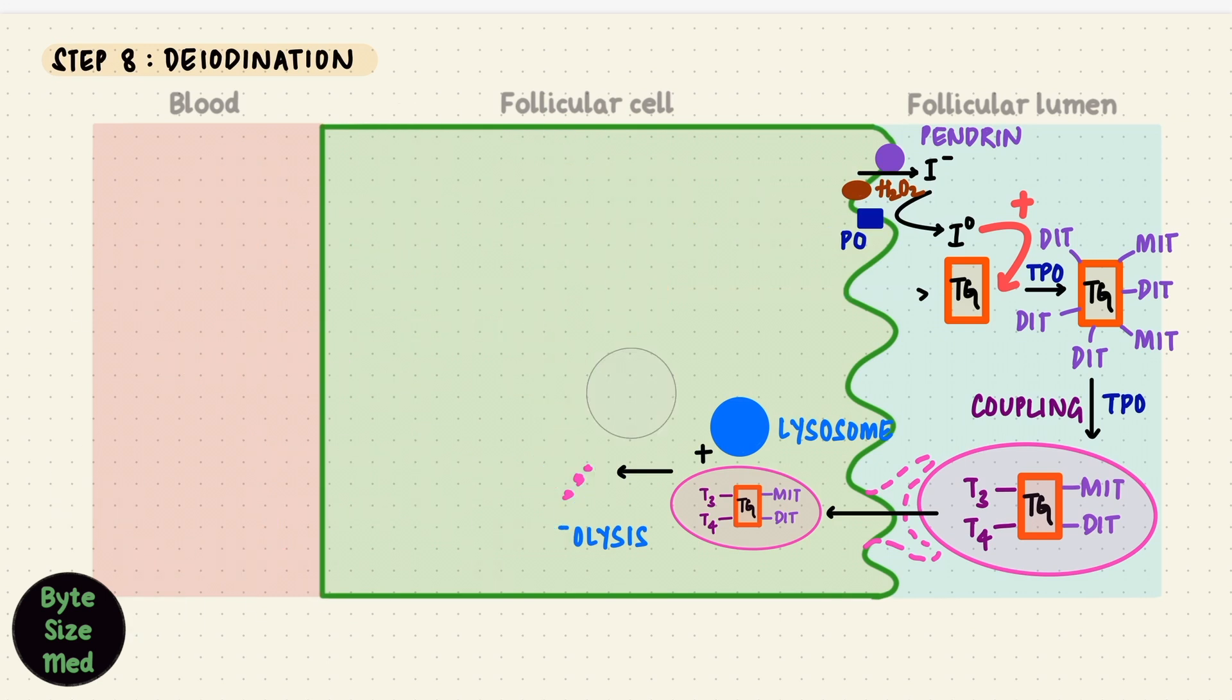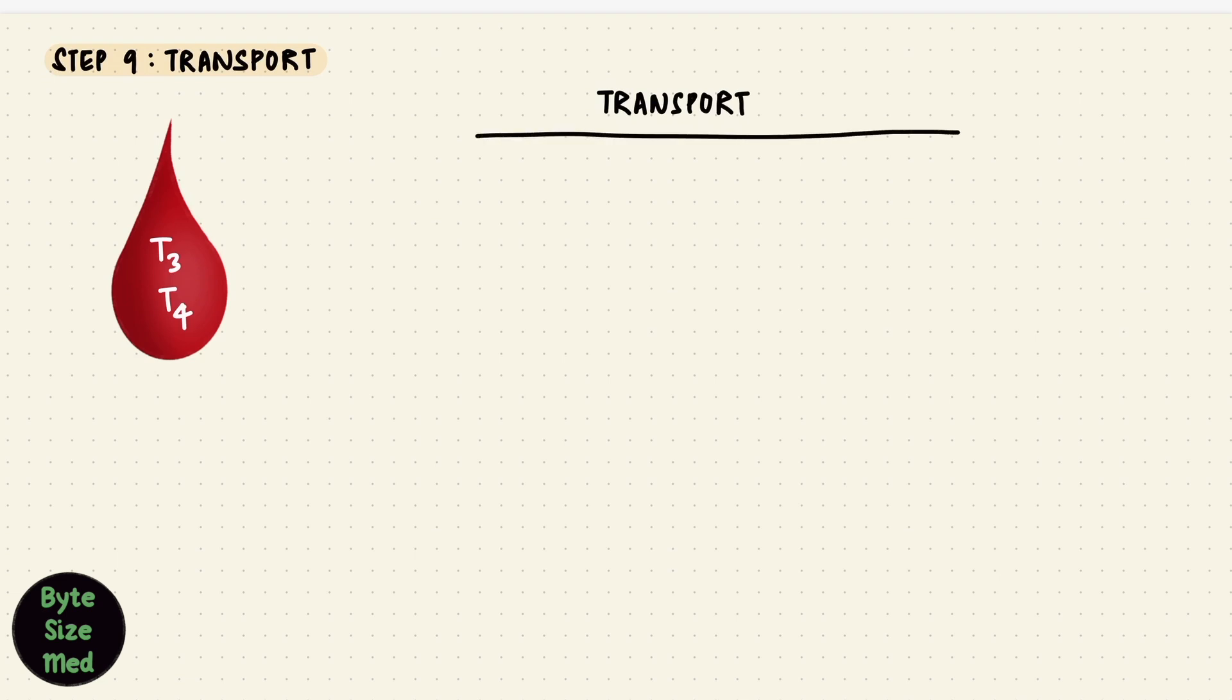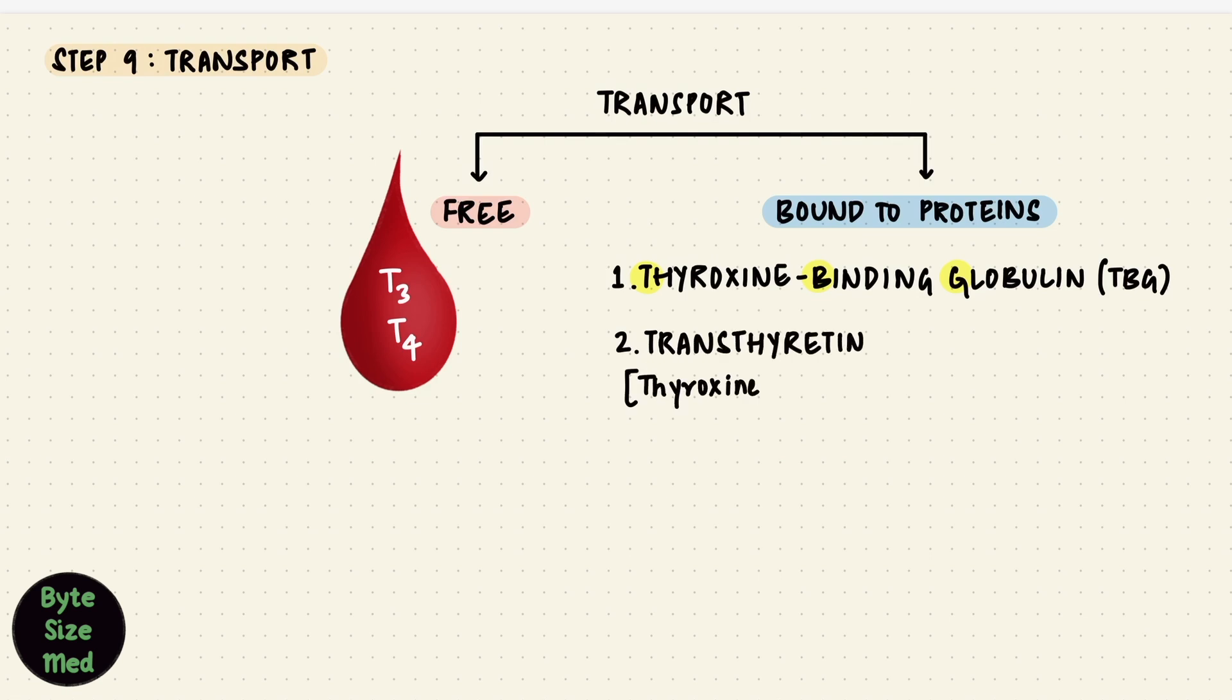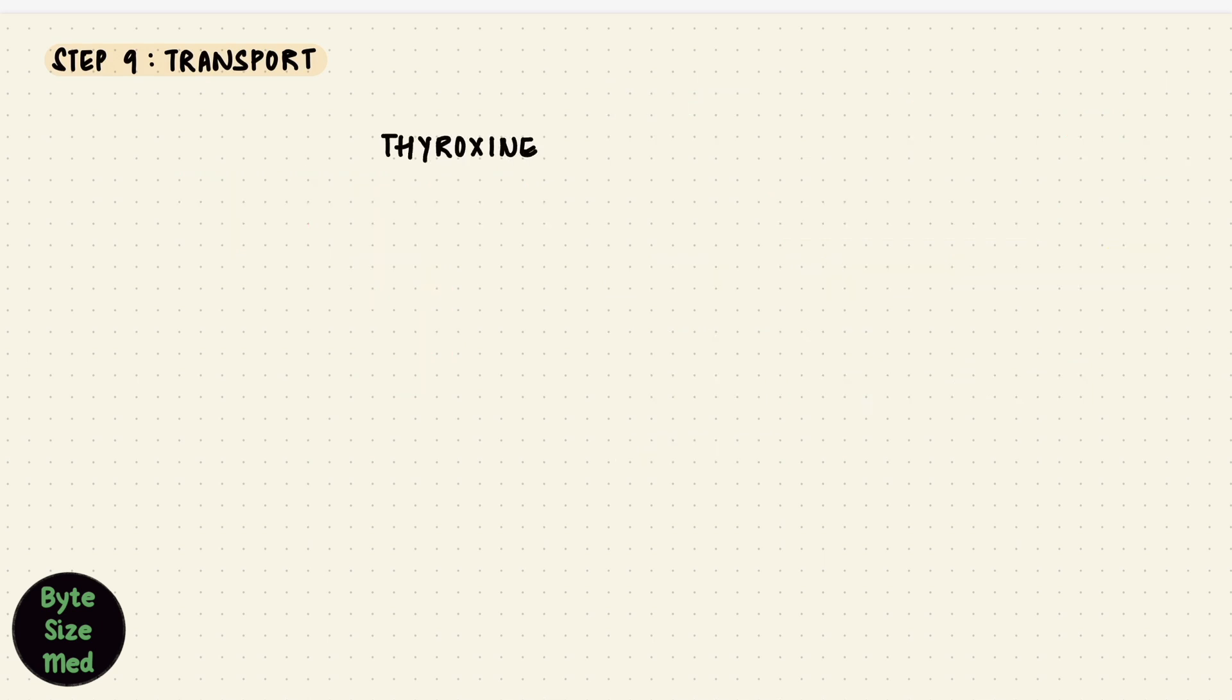Step 9. Transport. Now that T3 and T4 are in the plasma, they have to get transported in blood to reach their target cells, which are in different areas of the body. They could be free when they travel around like this, but most of them are bound to proteins. Three names you gotta remember here. The thyroxine binding globulin, TBG. Transthyretin is also called the thyroxine binding prealbumin and albumin. The highest affinity is with TBG. So most of the thyroid hormone is bound. It's the free hormones though that can act on tissues. The free hormones are the ones that are physiologically active. Different conditions can affect the levels of this thyroxine binding globulin.